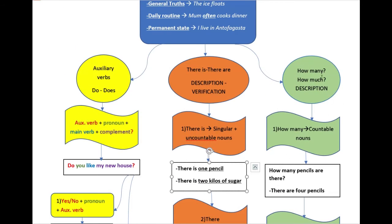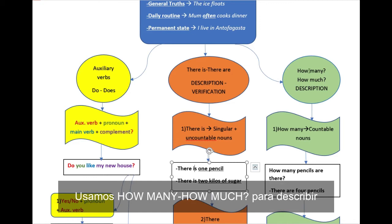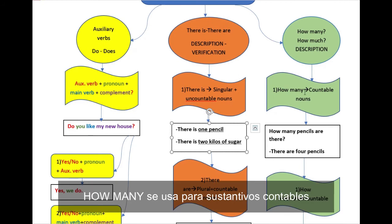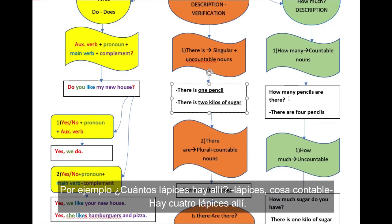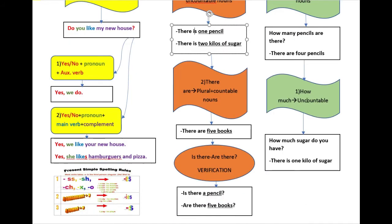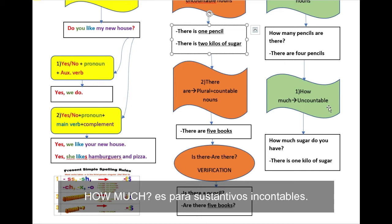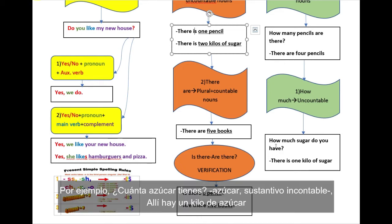How many? How much? We use how many and how much for description. How many is for countable nouns. For example, how many pencils are there? Pencils, countable nouns. There are four pencils. How much? Uncountable nouns. How much sugar do you have? There is one kilo of sugar. Sugar, uncountable noun.